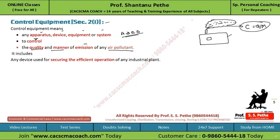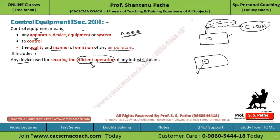And not only this — it also includes any device used for securing the efficient operation of an industrial plant. So if you have installed any equipment in your factory for the efficient operation of the industrial plant, that will also be treated as control equipment. Efficient operation means to reduce wastage and reduce cost. So any equipment installed for efficient operation of an industrial plant is also covered under control equipment.